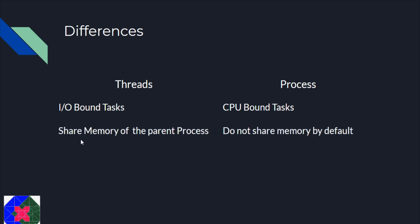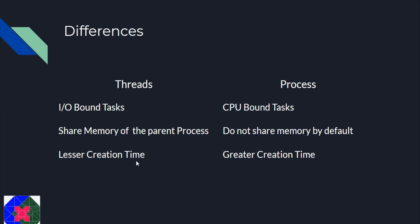Threads share memory of the parent process — that is one of the advantages of threads, because it shares memory of the parent process. Any thread can call any global variable of the process, whereas processes do not share memory by default, though we can implement shared memory manually. Threads have a lot lesser creation time whereas processes have a significantly greater creation time because they need to be created and scheduled, so it's a major overhead creating processes.